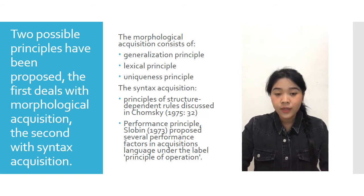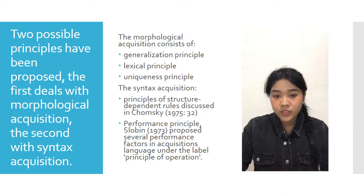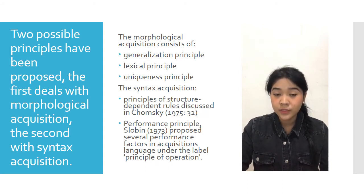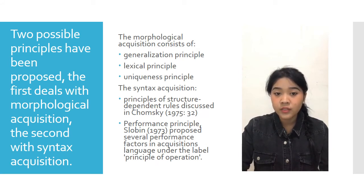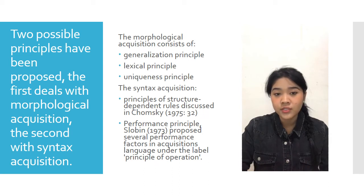The morphological acquisition consists of: first, the generalization principle, which deals with the stage at which a child acquires correct grammar; second, the lexical principle, the stage where a child understands affixes; and third, the uniqueness principle, by which a child chooses their language based on their environment.